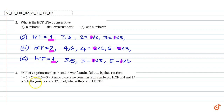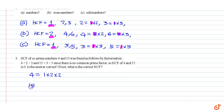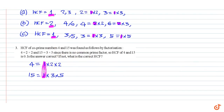We know that four is equal to one into two into two, and fifteen is equal to one into three into five, so the common factor is one. Therefore the answer is not correct, and the correct HCF is equal to one. These are our answers.